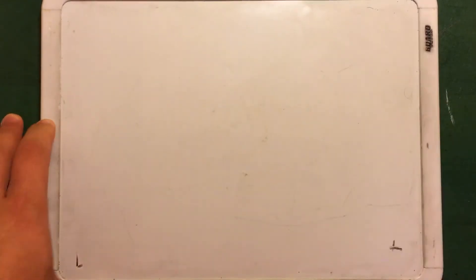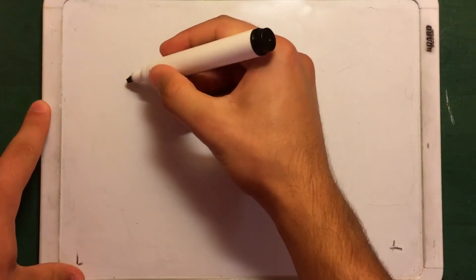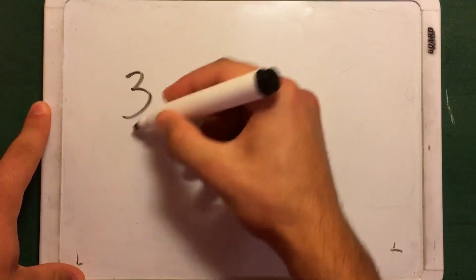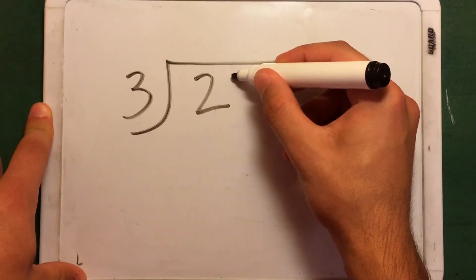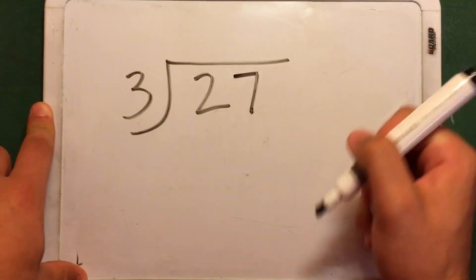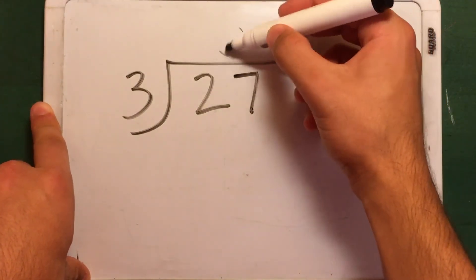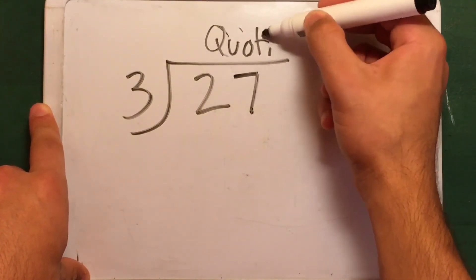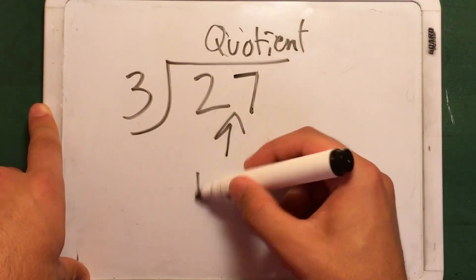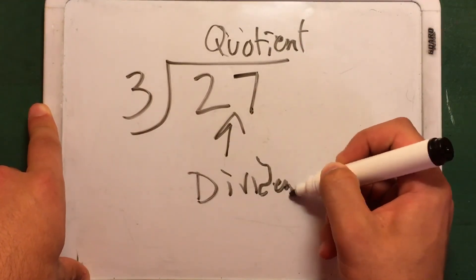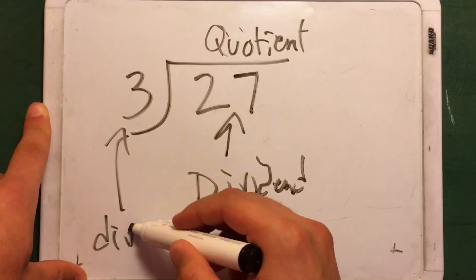In an interactive problem, let's say you'd be given three and twenty-seven. Your answer — the quotient — would be up here. This right here is the dividend, and the three is your divisor.